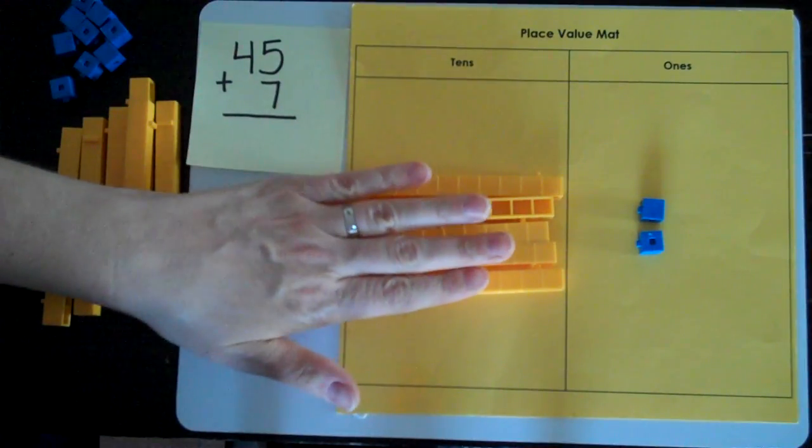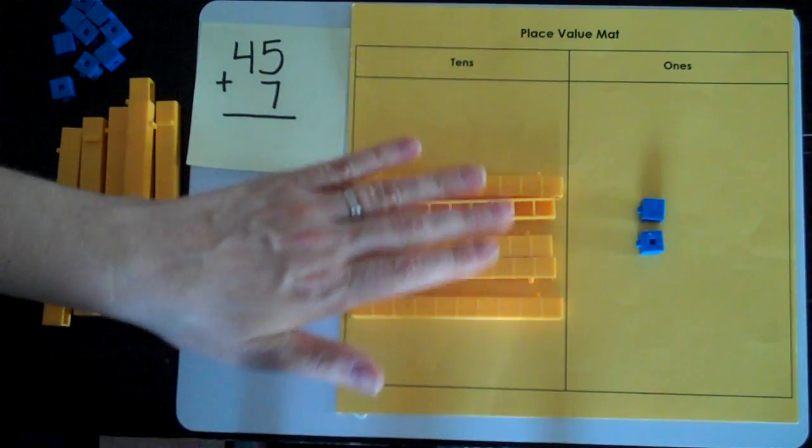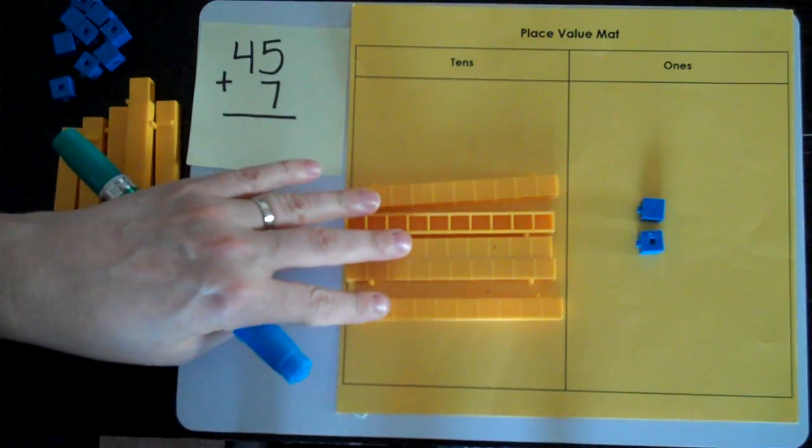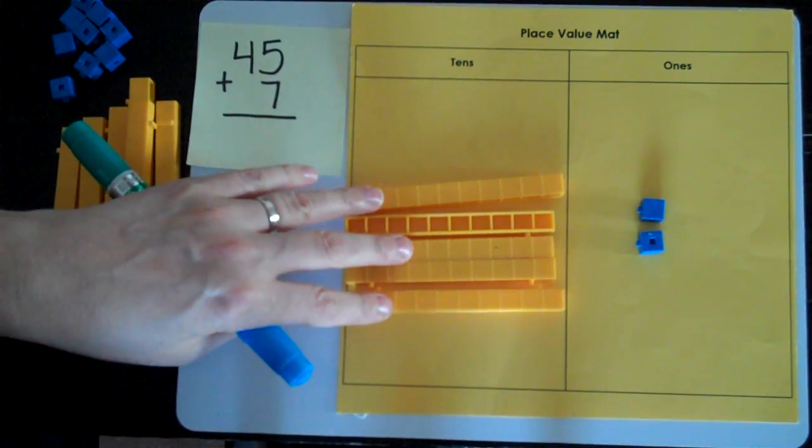I'm going to now count my tens. One, two, three, four, five tens. Five is in between zero and nine, so I don't have to do any trading.